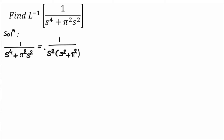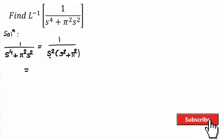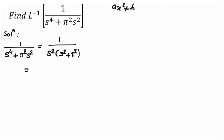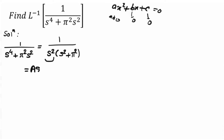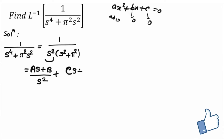Now this term — what will we do? We separate it using partial fractions. What is the rule of partial fractions? If it is a quadratic equation, it is 1 upon s squared. A quadratic equation is ax squared plus bx plus c. Here s squared is also a quadratic form. So the partial fraction method says we take A·s plus B divided by the first quadratic, plus C·s plus D divided by s squared plus pi squared.